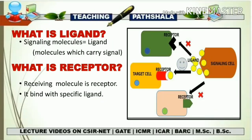Today we are going to see what is a ligand and what is a receptor. Ligands are mainly the signaling molecules which carry a signal, and these ligands are secreted from the cells which are supposed to send the signals. So signaling cells secrete signaling molecules, and that molecule is termed as a ligand. Now, a signaling cell secretes a signaling molecule, so someone should be there to receive that molecule. The molecules which receive the signaling molecules are known as receptors, and they bind with a specific ligand.